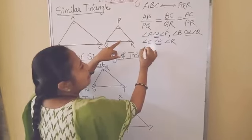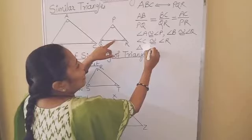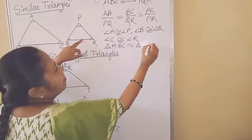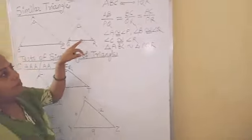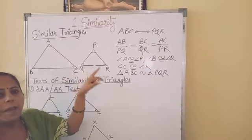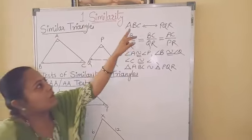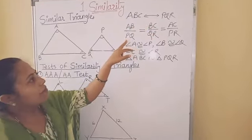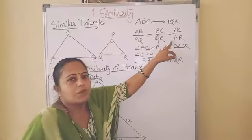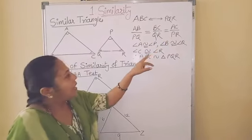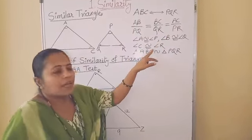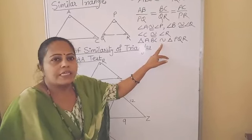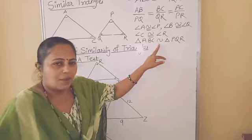We can write this with the similarity symbol: triangle ABC is similar to triangle PQR. So, with any one-to-one correspondence between vertices, if corresponding sides of two triangles are in proportion and corresponding angles are congruent, then the triangles are said to be similar triangles.